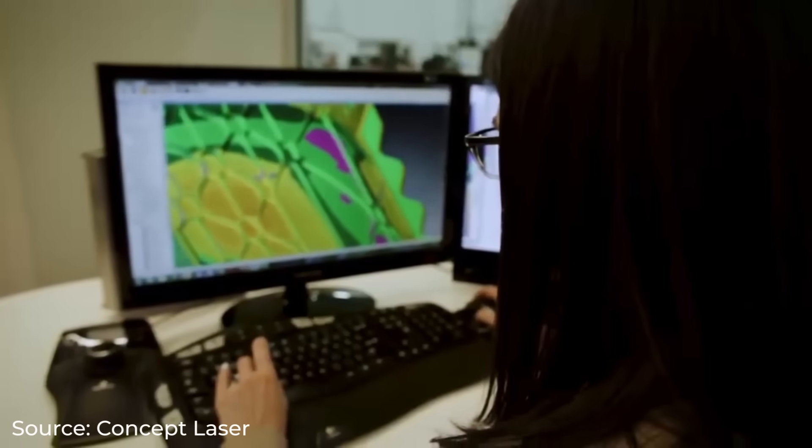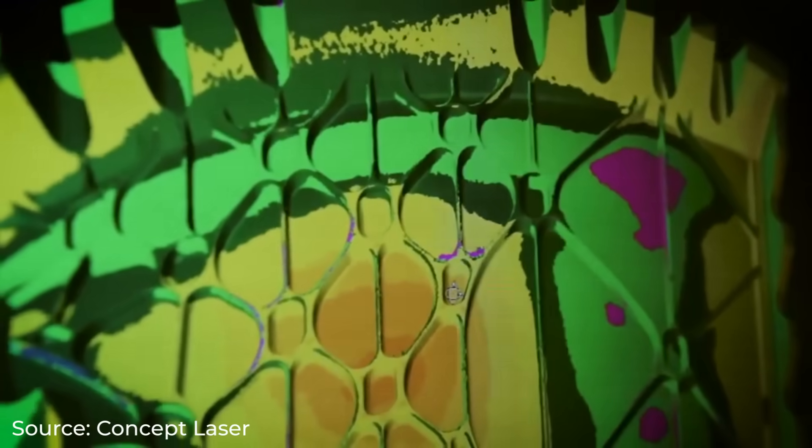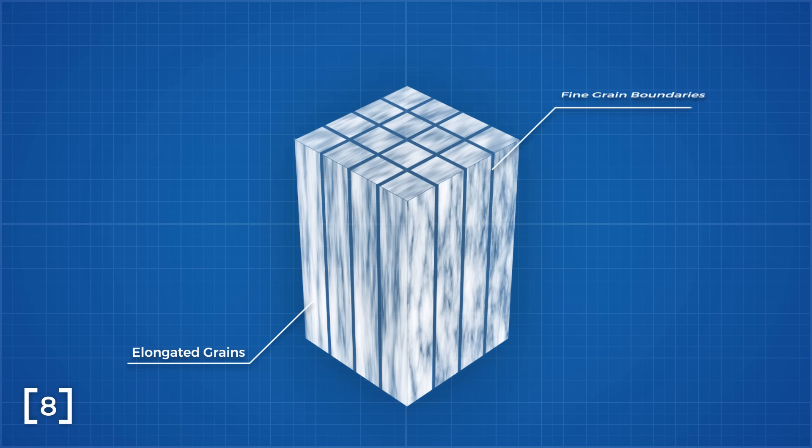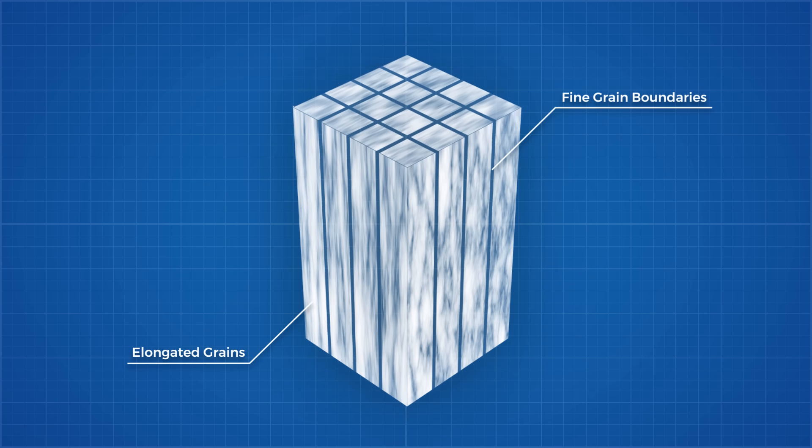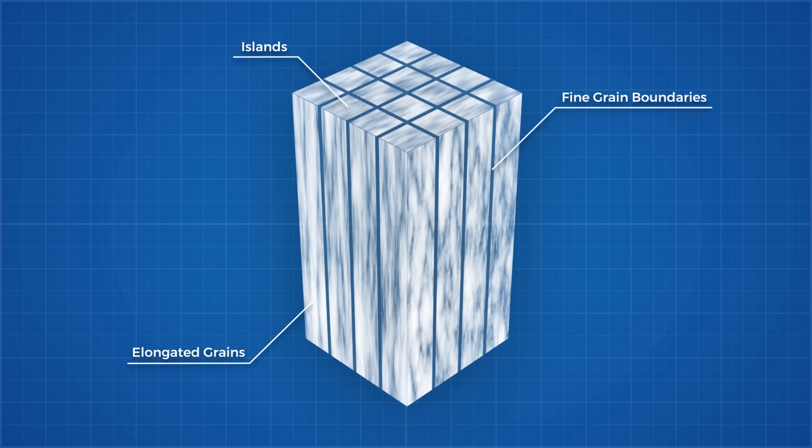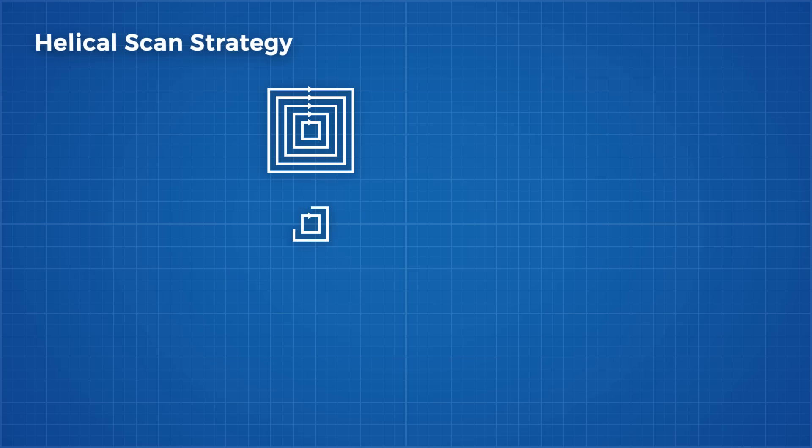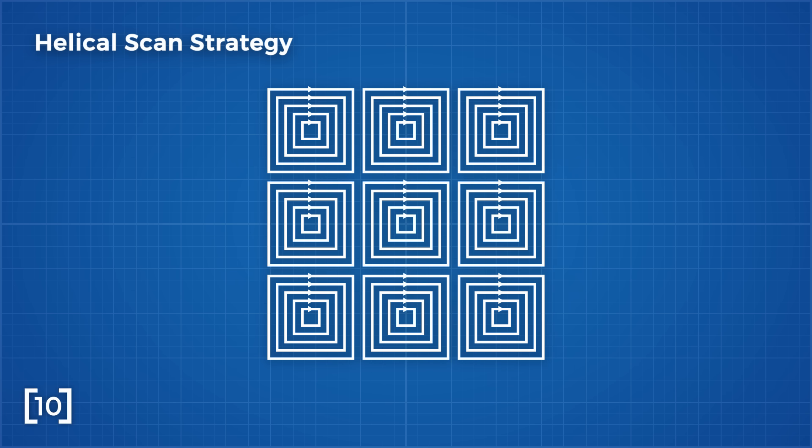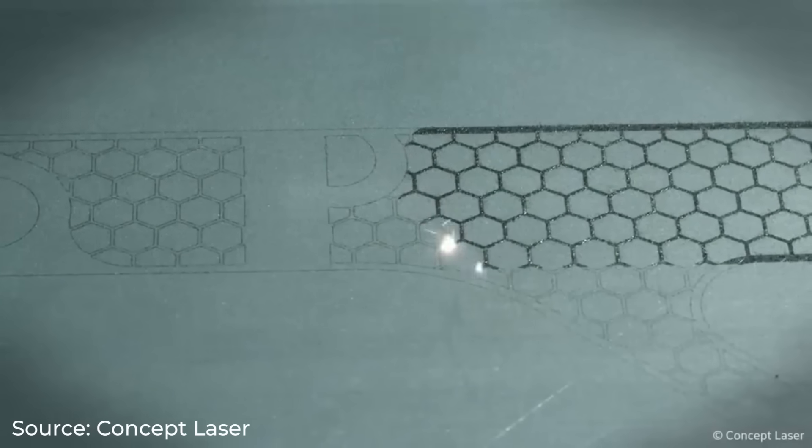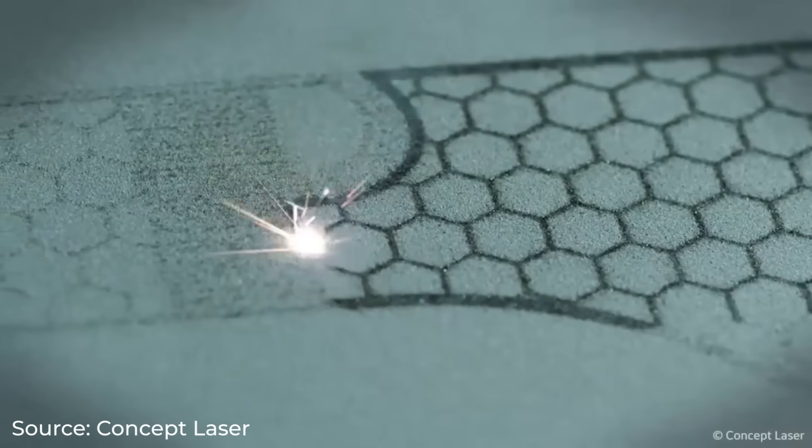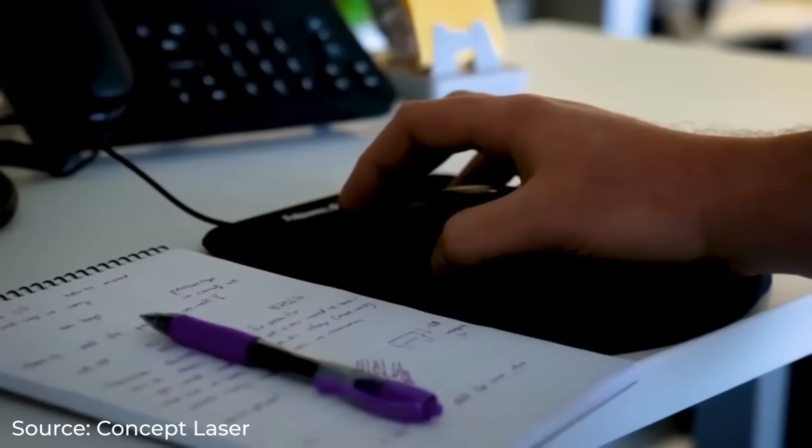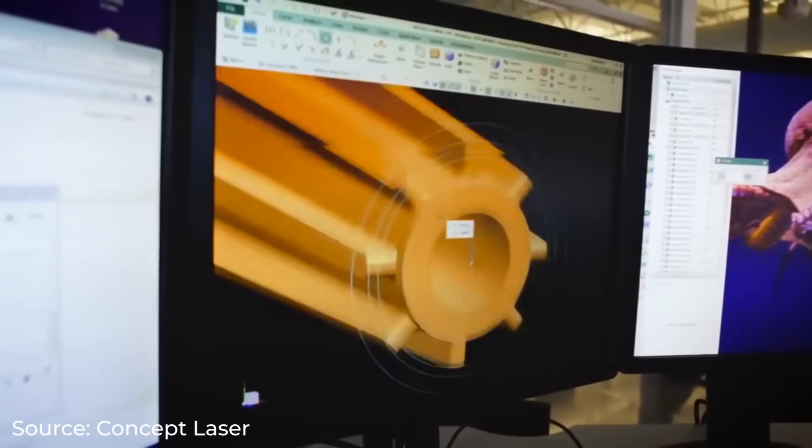However, one study found that this scan strategy has some unique effects on the grain structure, creating those aforementioned vertical grain structures with fine grain boundaries between each island, and these fine grain boundaries had a high density of cracks which again can grow and cause fatigue failure. There are of course alternative laser scan strategies like this helical one. Other researchers are attempting to use thermal and other specialised cameras inside the build chamber to observe the phenomenon like pore formation and inform the laser exactly how to operate with machine learning to maximise material properties.